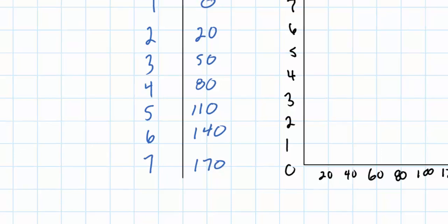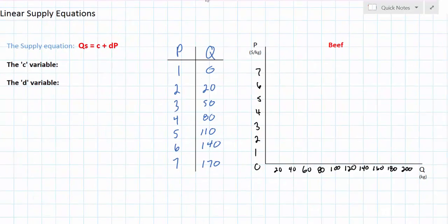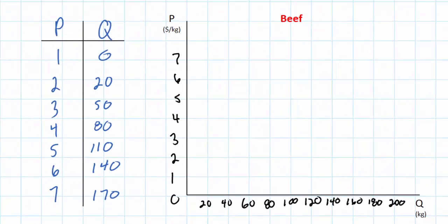This of course reflects the law of supply, which was explained in an earlier video. Let's go ahead and plot some points from our supply schedule on the graph on the right. At a price of $1, zero kilograms of beef will be supplied. However, at $2, 20 kilograms will be provided; at $3, 50 kilograms will be provided, and so on.